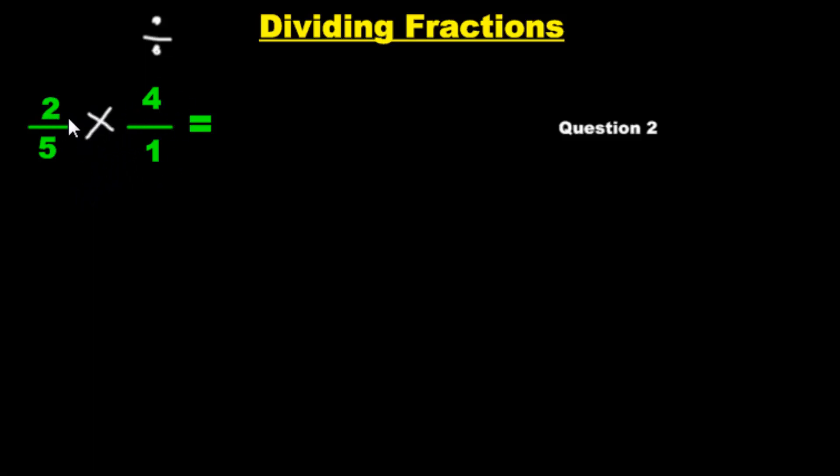Now, after we do that, we just do it like normal. 2 times 4 is 8. 5 times 1 is 5. And we get 8 over 5. Hey, let's turn it to a mixed fraction. We get 1 whole and 3 over 8. No, no, not 3 over 8. We got 3 over 5. Let's double check. 5 times 1 plus 3 is 8 over 5. Great.